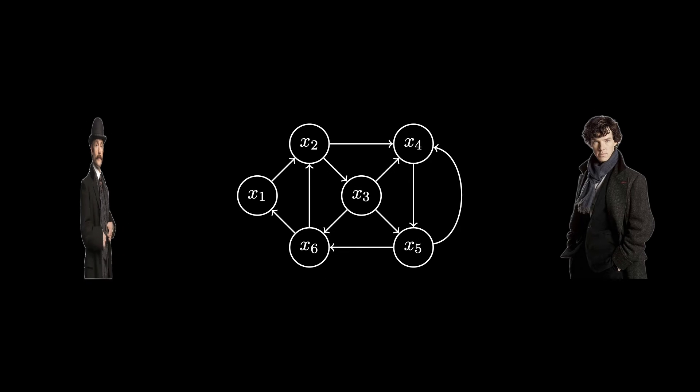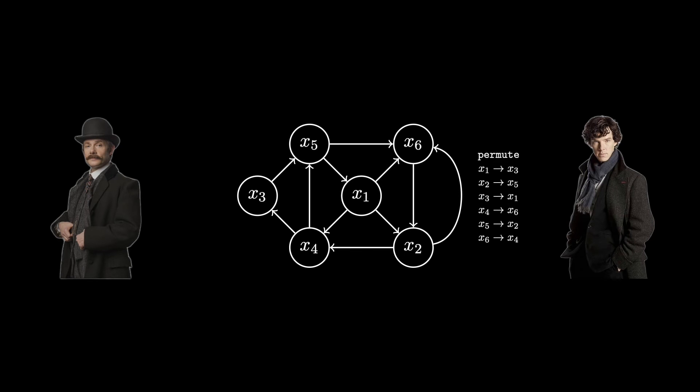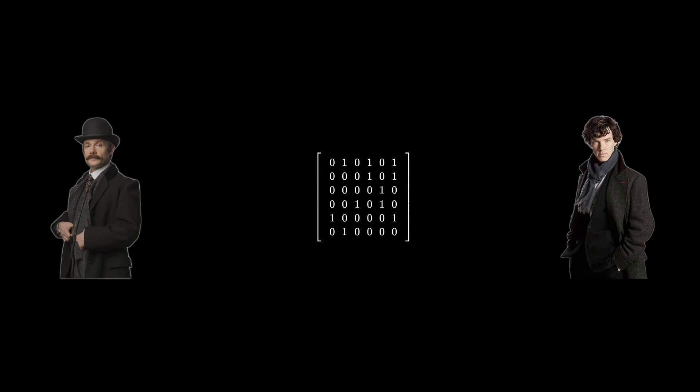First, Sherlock tells Watson to look away. Then Sherlock creates a permutation of the graph by simply permuting the names of each node in the graph. For example, Sherlock renames X1 with X3, X2 with X5, and so on. This leads to a permuted adjacency matrix. Sherlock only uses the adjacency matrix, hides every entry of the permuted matrix, and tells Watson to look back.